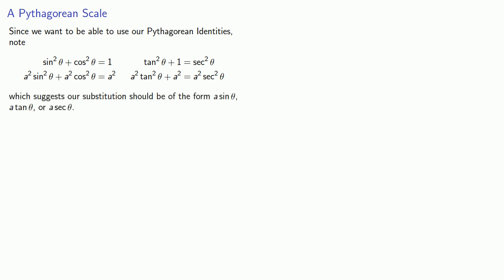Now, we do have to introduce one more thing. Since we want to be able to use our Pythagorean identities, we note that the two fundamental identities, sine squared plus cosine squared equals 1, and tangent squared plus 1 equals secant squared, if we multiply through by a squared, this suggests our substitution should be of the form a sine theta, a tangent theta, or a secant theta. Let's see how that works.